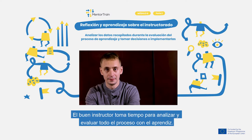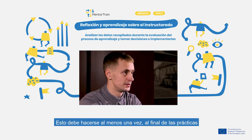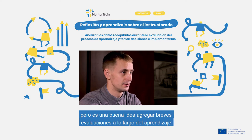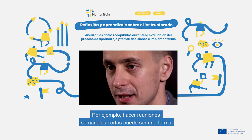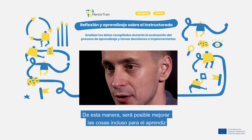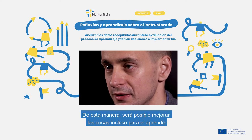A good mentor takes time to meet and discuss the overall execution of the apprenticeship with the apprentice to evaluate the process. This should be done at least once at the end of the apprenticeship, but it is not a bad idea to do short evaluation sessions throughout the apprenticeship. For example, during weekly meetups a short time can be dedicated to it, which offers the opportunity to improve things already for the current apprentice.